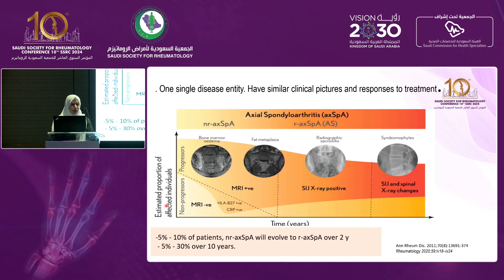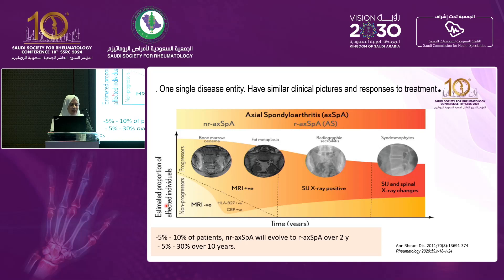Patients who do not have evidence of sacroiliitis on plain X-ray may have evidence of inflammation on MRI. Not all patients with non-radiographic axial spondyloarthritis will transform to radiographic axial spondyloarthritis. Those at risk include males, younger patients with back pain, high inflammatory markers, positive HLA-B27, high inflammatory evidence on MRI, smokers with uveitis, but without peripheral joint involvement. Around 10% will evolve to radiographic axial spondyloarthritis over two years, increasing to 30% over 10 years.